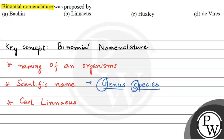Now looking at the options — first option is Boheen, but Boheen was not involved in binomial nomenclature, so that is incorrect. Linnaeus, as we saw, was the one who proposed binomial nomenclature, so that is the correct answer. Third option, Huxley, was responsible for proposing the new systematics or bio-systematics and was not involved with binomial nomenclature. Fourth option, Hugo De Vries, was responsible for evolution-related work and was not involved in binomial nomenclature, so that is also incorrect.